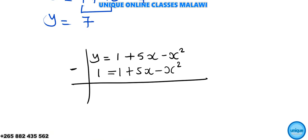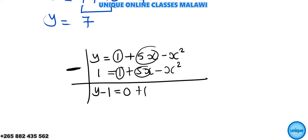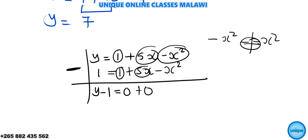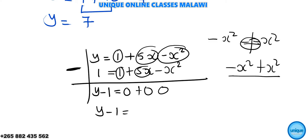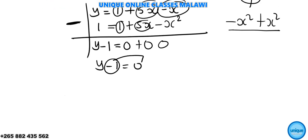To solve it, we rearrange: y minus 1 equals 0. Then 1 minus 0 equals 0, and negative x squared plus x squared equals 0. So it simplifies to y minus 1 is equal to 0, which means y is equal to 1.